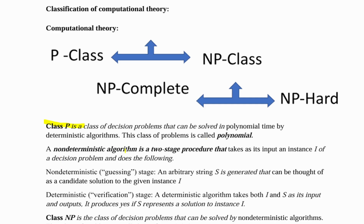Then we have non-deterministic algorithms, which is a two-stage procedure — a guessing stage and a verification stage. It takes input as an instance I of a decision problem. In the non-deterministic guessing stage, an arbitrary string is generated that can be thought of as a candidate solution to the given instance. In the verification stage, a deterministic algorithm takes both the instance I and the arbitrary string S as input and outputs yes if S represents a solution to instance I. Firstly, we are guessing the solution, and secondly, we are verifying if the guessed solution represents a solution to that particular instance.